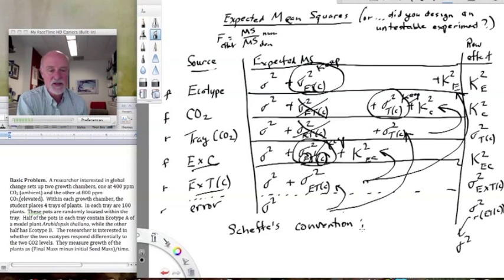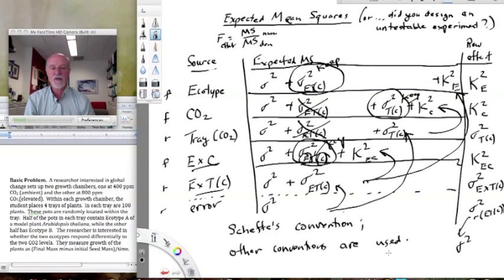Now, I do want to say this is Scheffé's convention for finding expected mean squares. It's used a lot by geneticists. It's used by others as well. But there are other conventions. So your specific software may not use this. And you'll want to find out what convention it does use because it's actually often in complex models you'll be asked when you're having your paper reviewed what convention you used for calculating your expected mean squares.